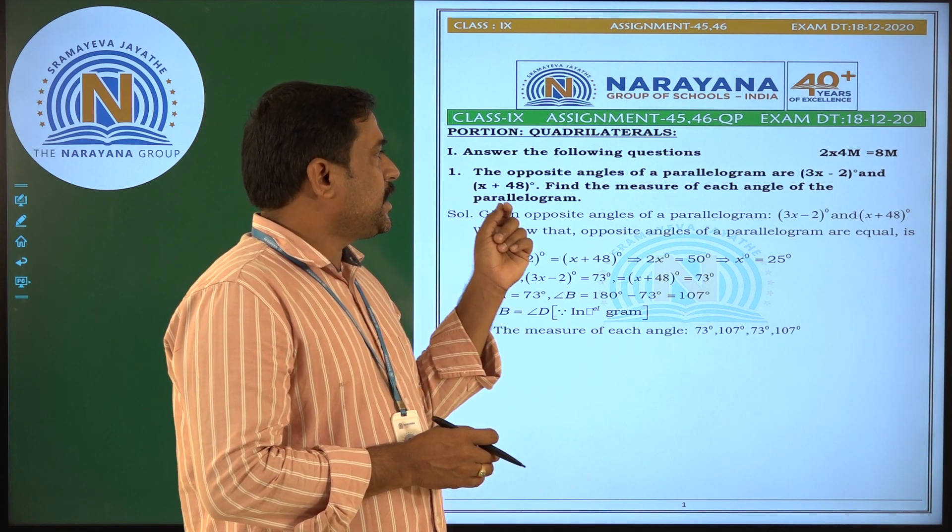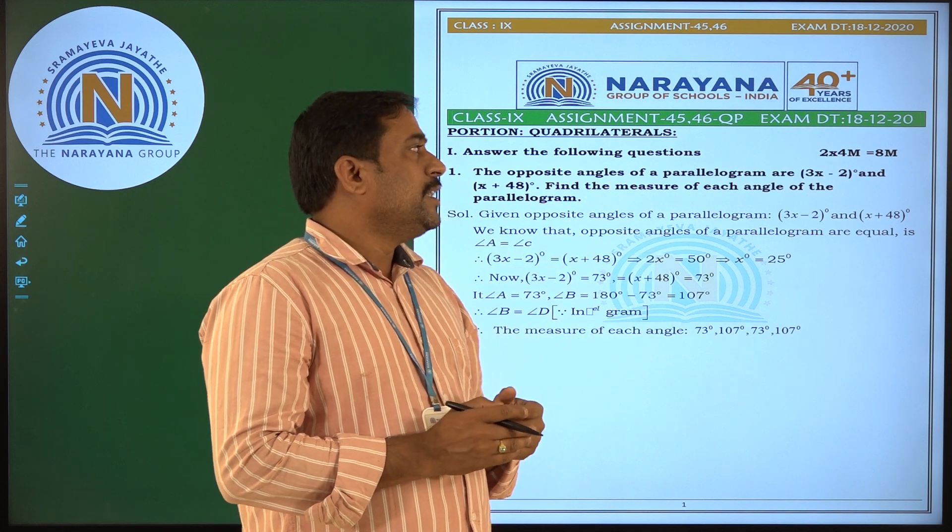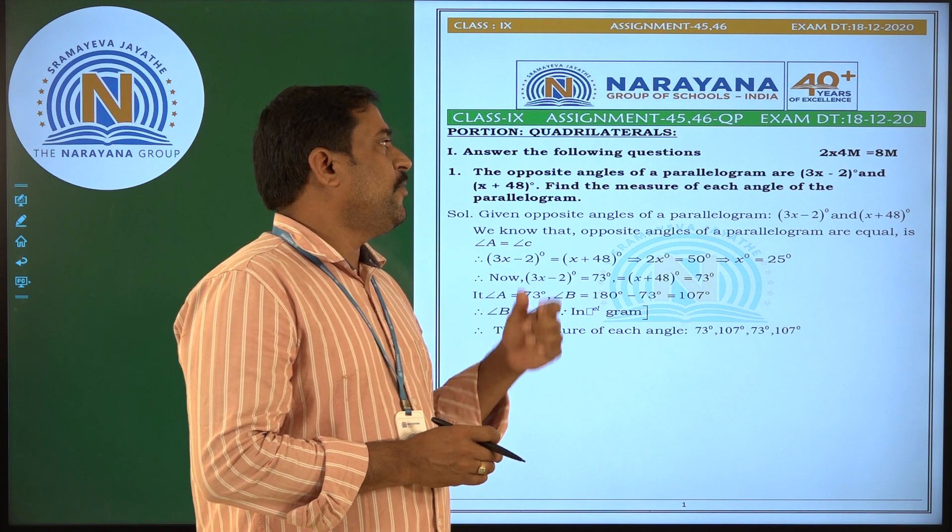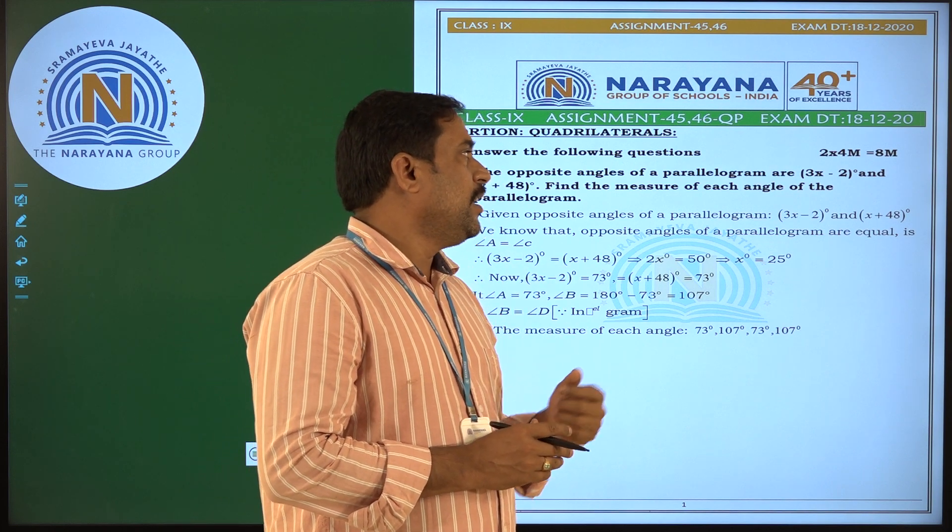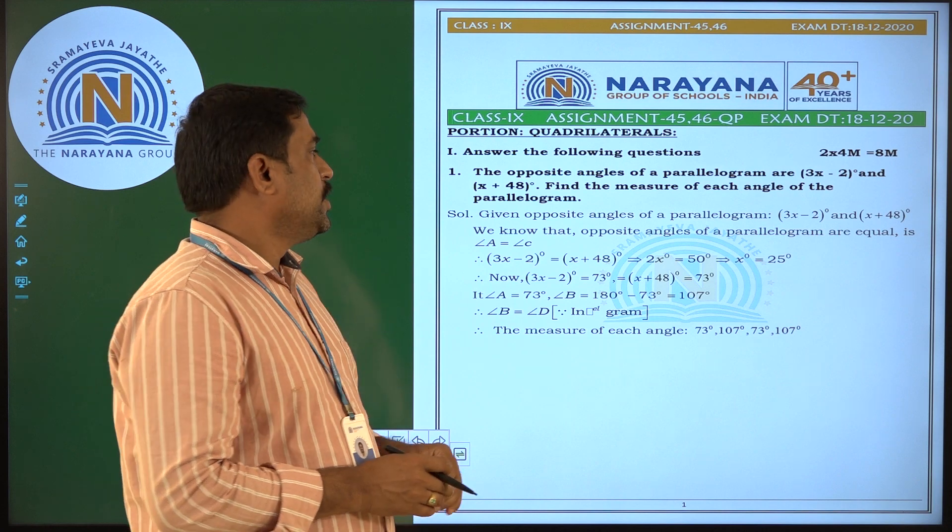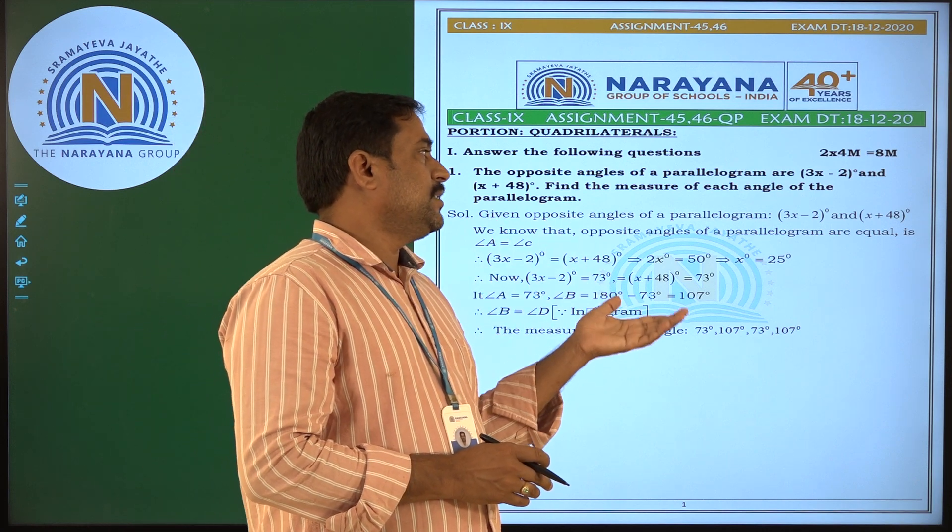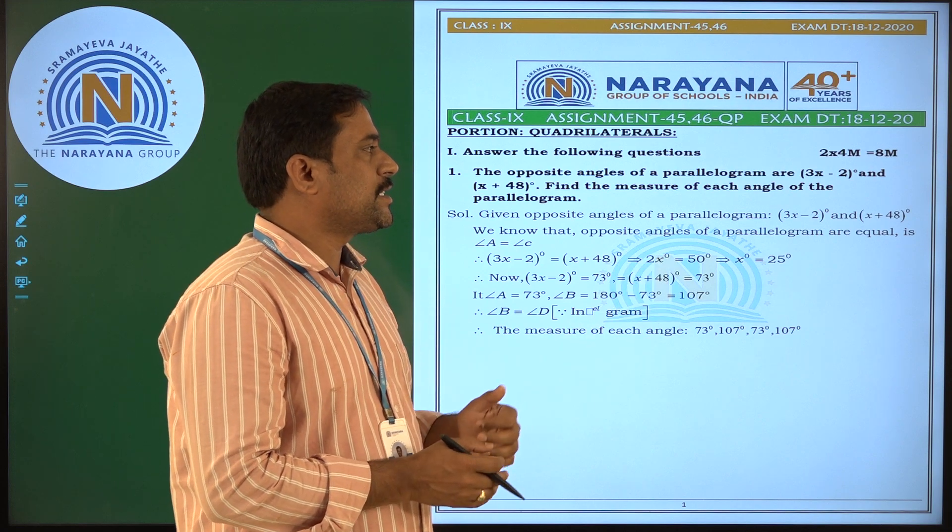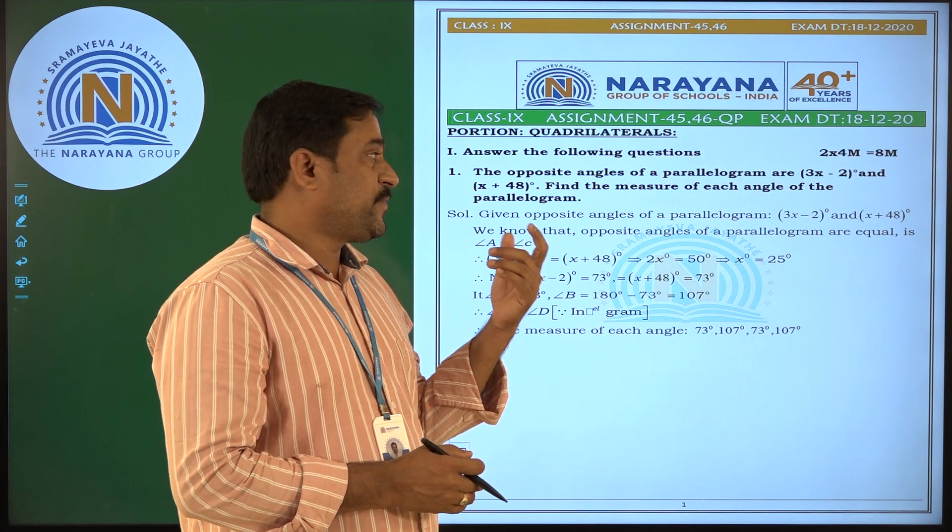The opposite angles of a parallelogram are 3x minus 2 degrees and x plus 48 degrees. Find the measure of each angle of the parallelogram. So here the opposite angles of a parallelogram are given as 3x minus 2 and x plus 48.